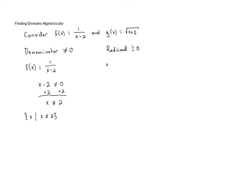Now let's look at g of x, which equals the square root of x plus 3. We know the radicand has to be greater than or equal to 0. The radicand here is x plus 3, so we know x plus 3 must be greater than or equal to 0. To get x alone, we subtract 3 from both sides, giving us x is greater than or equal to negative 3. The domain is the set of numbers x such that x is greater than or equal to negative 3. Whenever we have a variable inside a square root, we take the radicand and set it greater than or equal to 0, solve, and that gives us our domain.